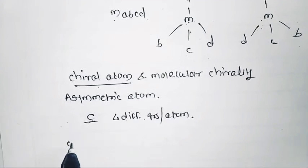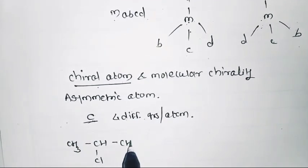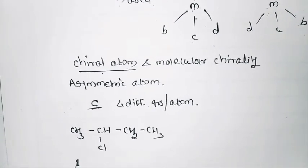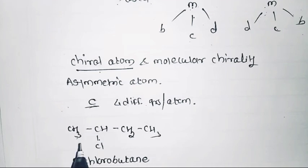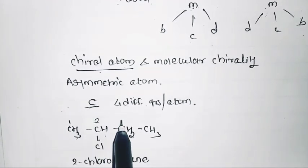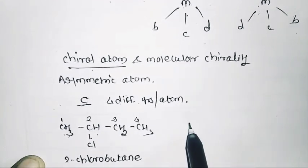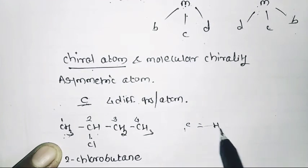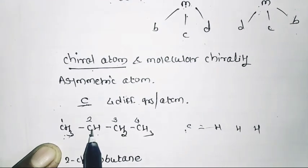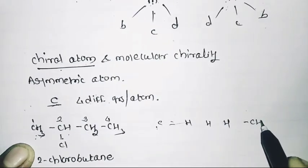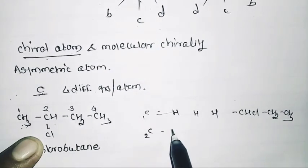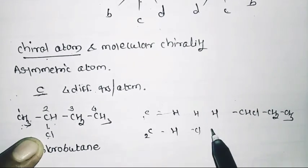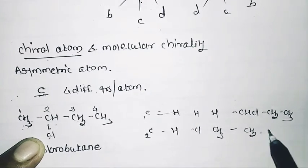For example, CH3CHClCH2CH3 — the name of this compound is 2-chlorobutane. In 2-chlorobutane we check which carbon is a chiral carbon. Carbon 1 is attached to 3 hydrogen atoms and the group CHClCH2CH3. Carbon 2 is attached to 1 hydrogen, 1 chlorine, CH3, and CH2CH3.